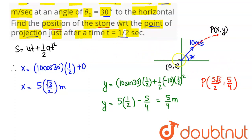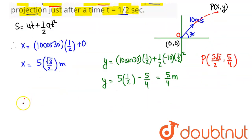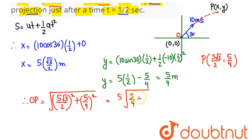Hence, if we calculate the distance from the point of projection to point P, this distance comes out to be root under 5 root 3 upon 2 whole squared plus 5 upon 4 whole squared. This simplifies as 5 root under 3 upon 4 plus 1 upon 16. Hence taking lcm, 12 plus 1 is 13 meter.